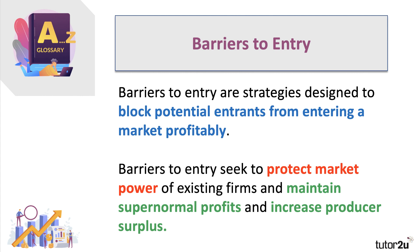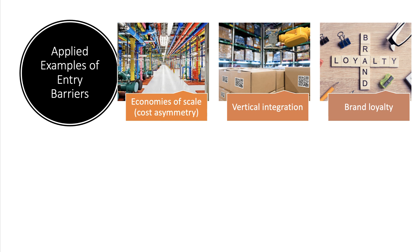Essentially, barriers to entry try to protect the existing firm's market power, maintain supernormal profits in the long term, and increase producer surplus so that profit may find its way back to shareholders. There are many examples of barriers to entry. Perhaps the most significant barrier is the cost asymmetry between an established firm and a potential rival.